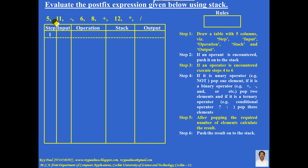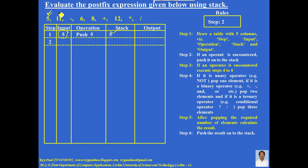Step 1: the first input encountered is 5. If an operand is encountered, push it onto the stack, so the stack contains 5. The next input is 11. If an operand is encountered, push it onto the stack — 5 is still there and 11 is added on top.